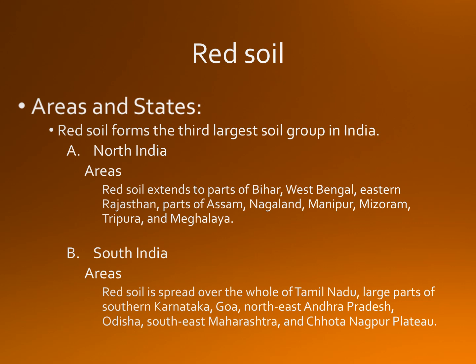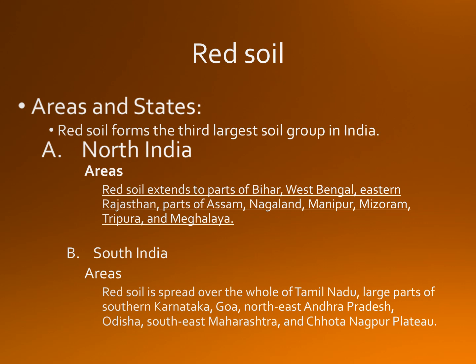Red soil forms the third largest soil group in India. It is found both in North India as well as in South India. In North India, red soil extends to parts of Bihar, West Bengal, Eastern Rajasthan, parts of Assam, Nagaland, Manipur, Mizoram, Tripura, and Meghalaya.